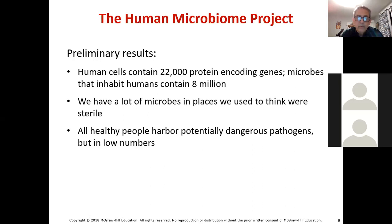Human cells have about 22,000 protein-coding genes, but when you add up all the genes of our various microbes, it's about 8 million. We now have microbes in places in our body that we used to think were sterile even just a decade ago. All healthy people harbor potentially dangerous pathogens, but there are low enough numbers that our immune system can keep them in check.